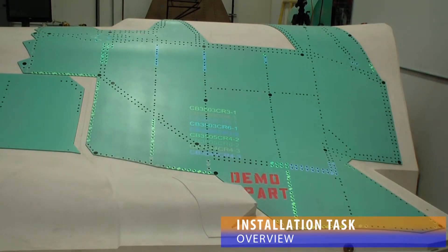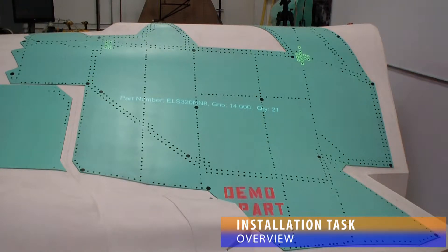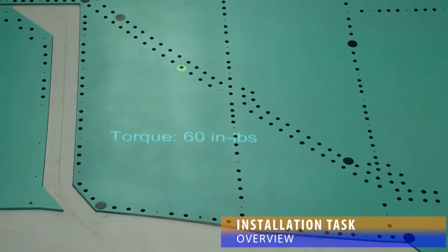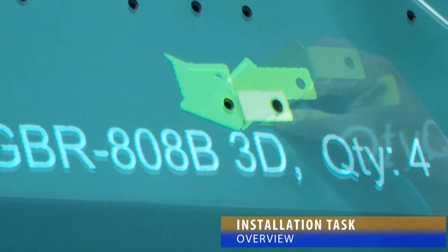It can be sorted automatically, like this fastener installation task. It can be sequenced in a precise order, like this torque task. The installation task can even display uninstalled items in 3D, like this bracket.